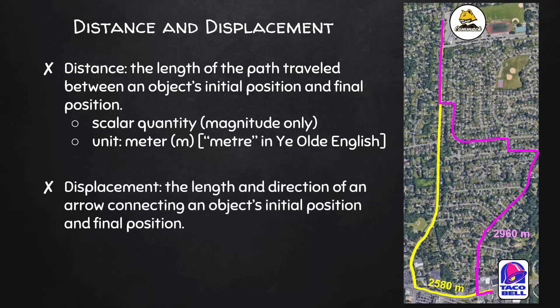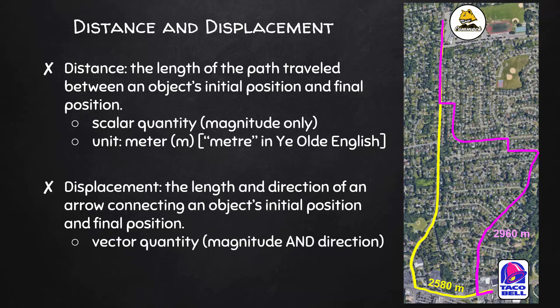Displacement is the length and direction of an arrow connecting an object's initial position and final position. It's a vector quantity, which means it has both magnitude and direction. It's also measured in meters. This arrow represents my displacement vector. Whichever route I take, I'm starting at the entrance to the Town Line Road parking lot and ending at Taco Bell — 2,030 meters south-southeast of where I started.